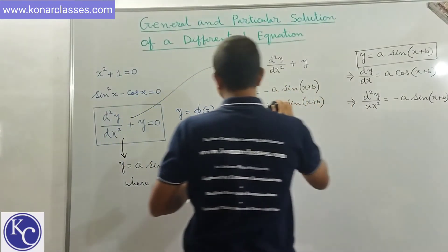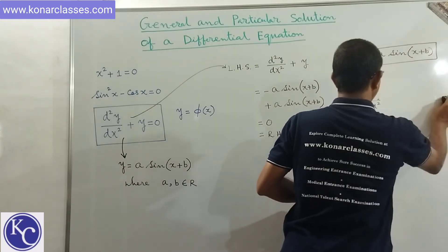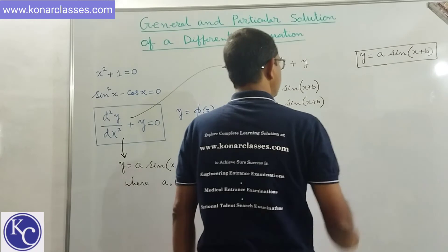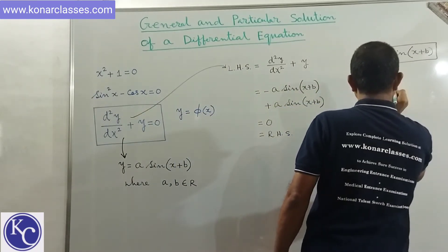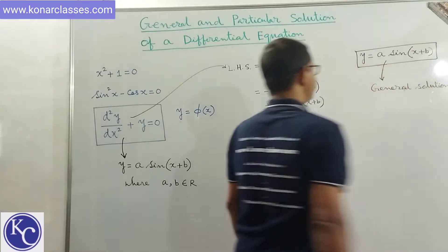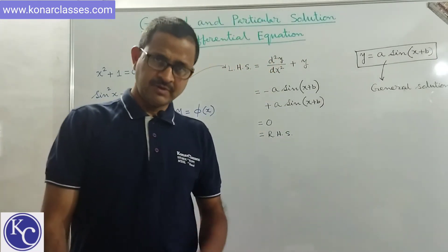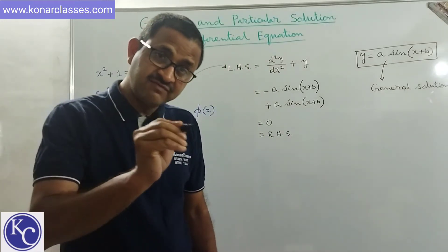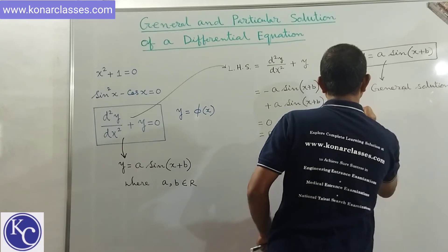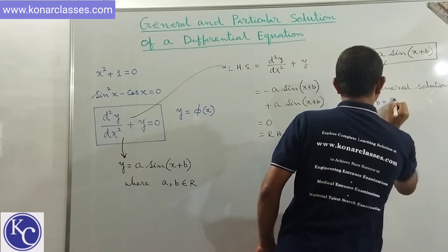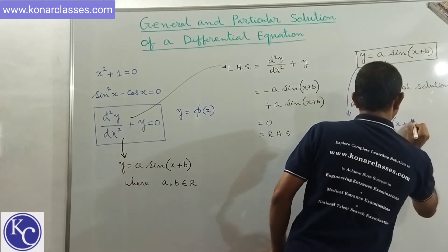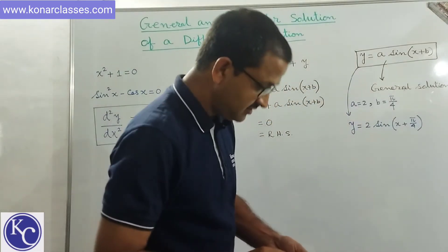Moreover, as we see in the solution y equal to a sin x plus b, there are parameters a and b, so this is known as a general solution. If we apply specific values to a and b — for example, a equal to 2 and b equal to π/4 — we get y equal to 2 sin x plus π/4, and this solution is known as a particular solution.